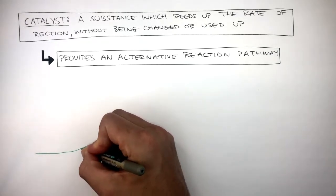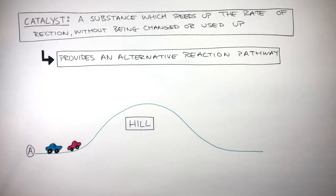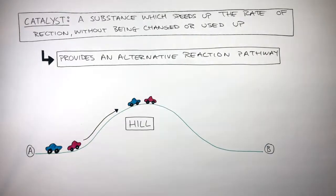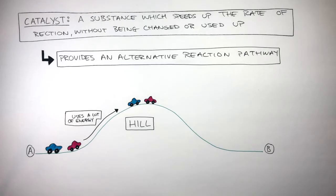We can use the analogy of a steep hill to understand how catalysts provide an alternative reaction pathway. In this analogy, the cars drive over the hill from point A to point B. The cars drive up the steep hill — this uses a lot of energy. Only the cars with a lot of energy are able to drive up the steep hill. The cars with less energy are not able to carry out this journey.